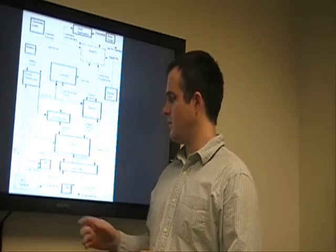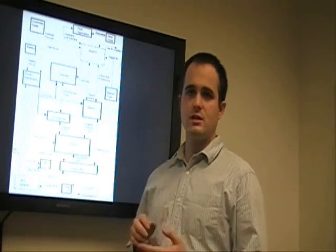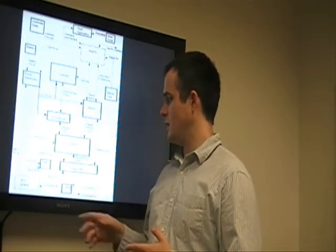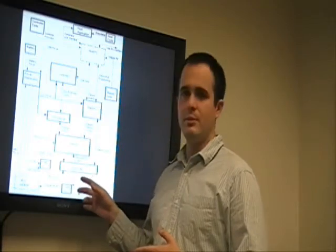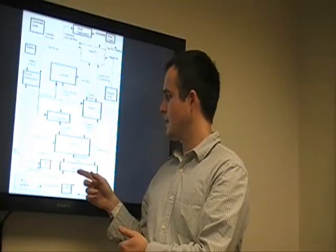And then all of the communication data, which is the address and the data buses, will be communicated through a data buffer. Because the NES operates at 5 volts, whereas all of our equipment operates at 3.3, the level shifting will be done here to change those logic levels.